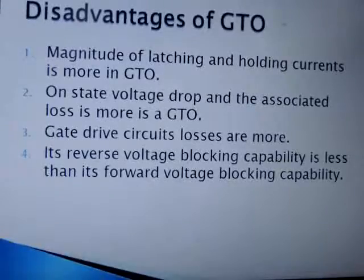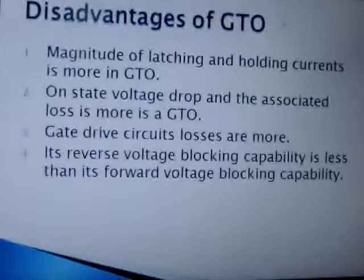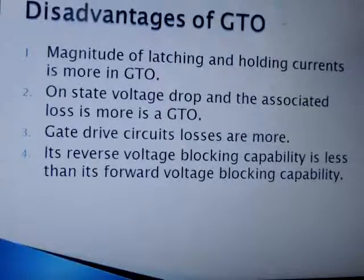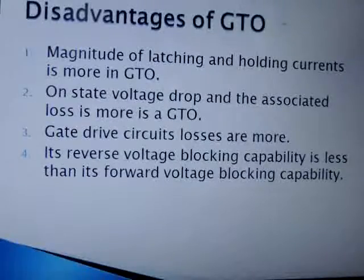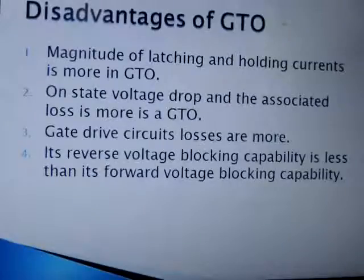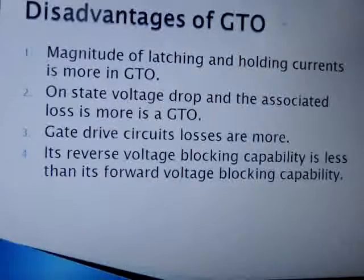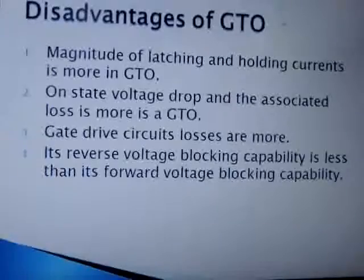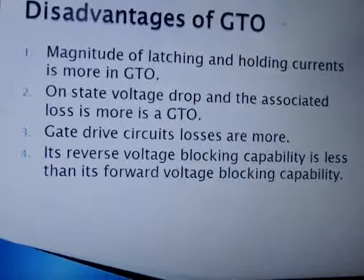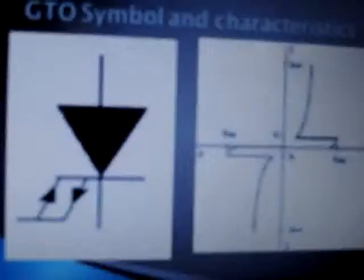The advantage of a GTO (Gate Turn-Off thyristor) is that it can be turned off by applying a gate pulse, whereas a normal SCR cannot be turned off by a gate pulse — it can only be turned on. To turn off a normal SCR, the anode current must be made less than the holding current. In a GTO, we can turn it off by applying a negative gate pulse. However, it has four disadvantages due to which it is not normally used in power electronic circuits. This is the symbol of a GTO and its VI characteristics.